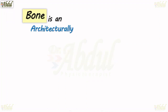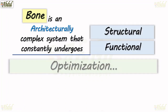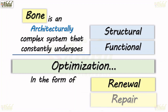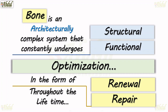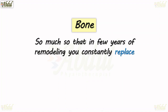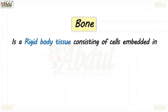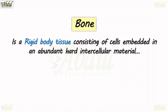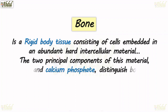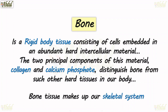Bone is an architecturally complex system that constantly undergoes structural functional optimization in the form of renewal and repair throughout the lifetime. So much so that in a few years of remodeling, you constantly replace your bone to a new bone. Bone is a rigid body tissue consisting of cells embedded in an abundant hard intercellular material, and the two principal components are collagen and calcium phosphate, which distinguish our bone from other hard tissues in our body. And obviously, the bone tissue makes up our skeletal system.